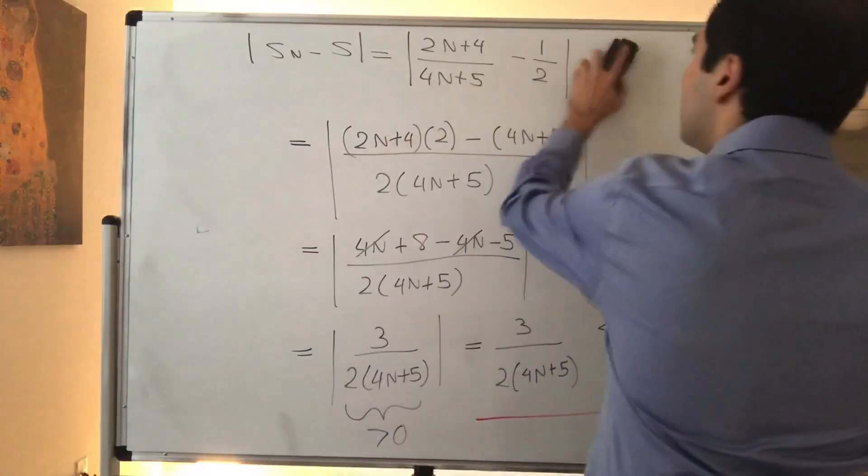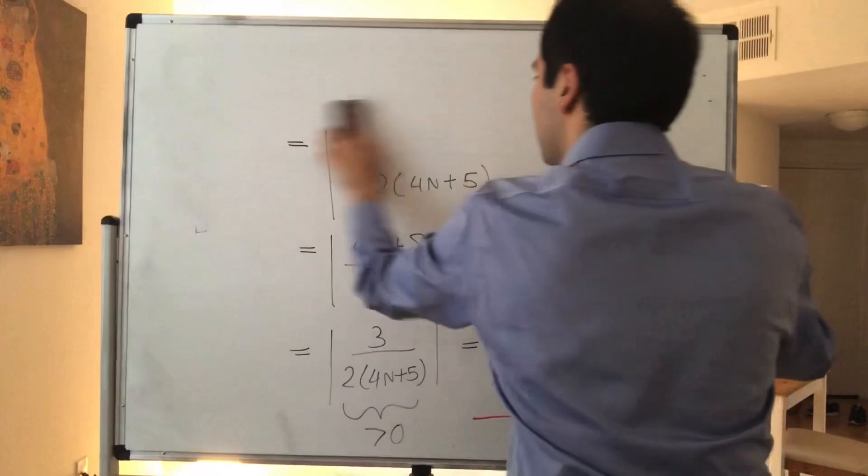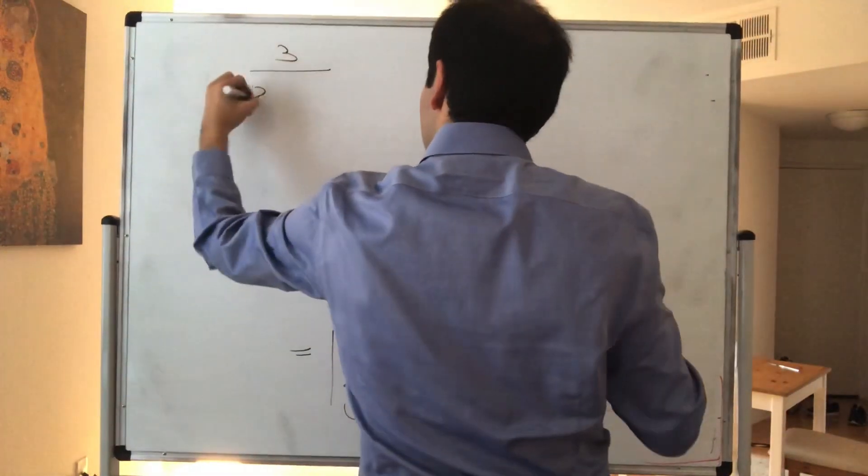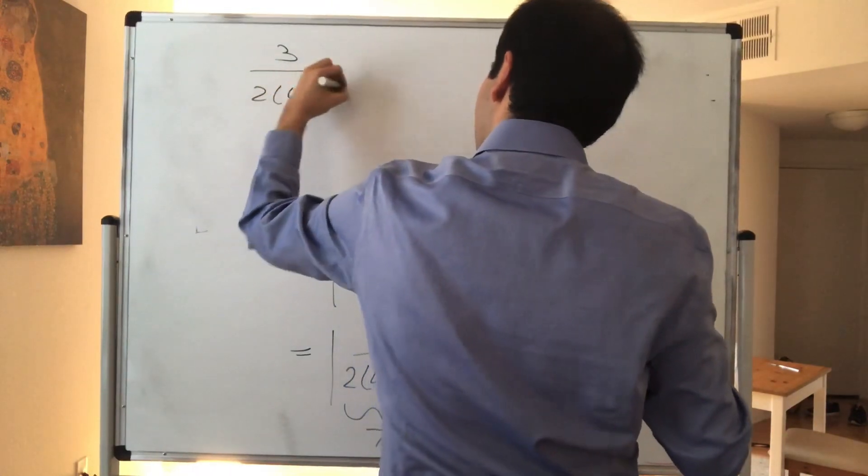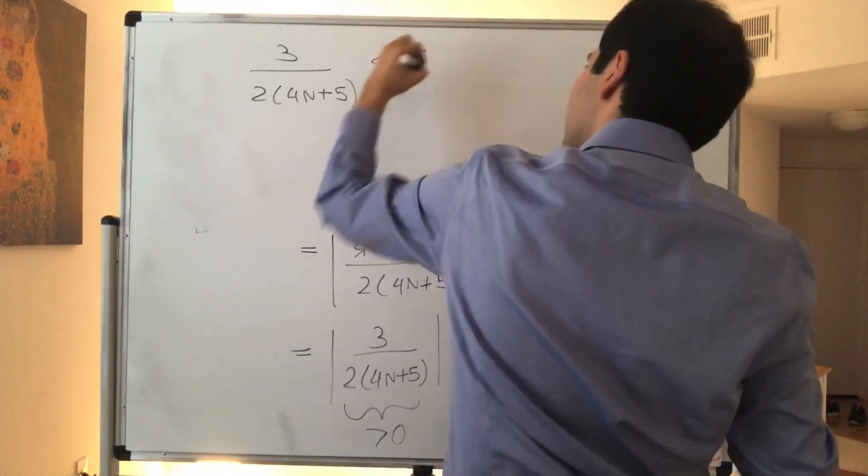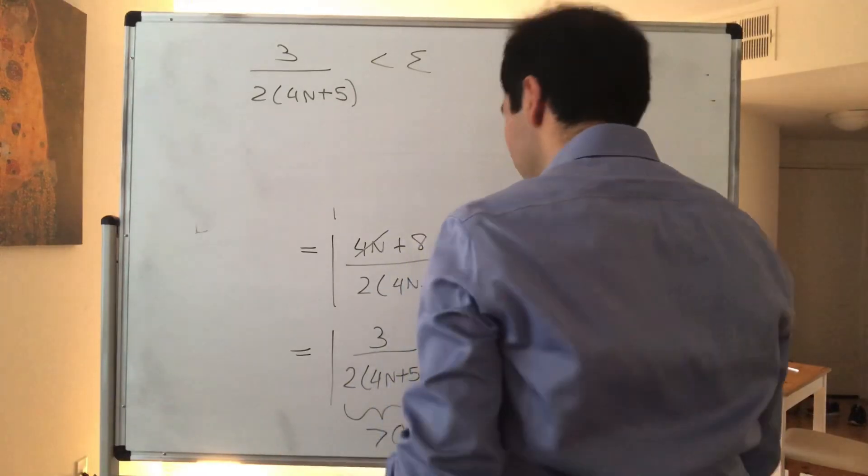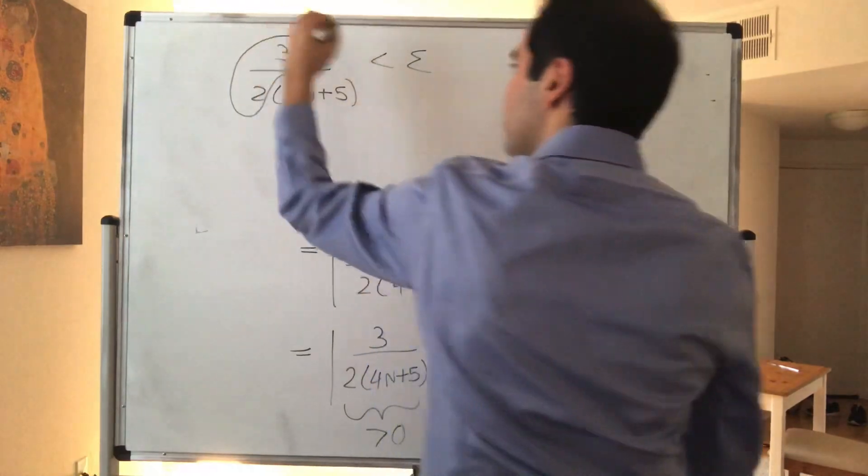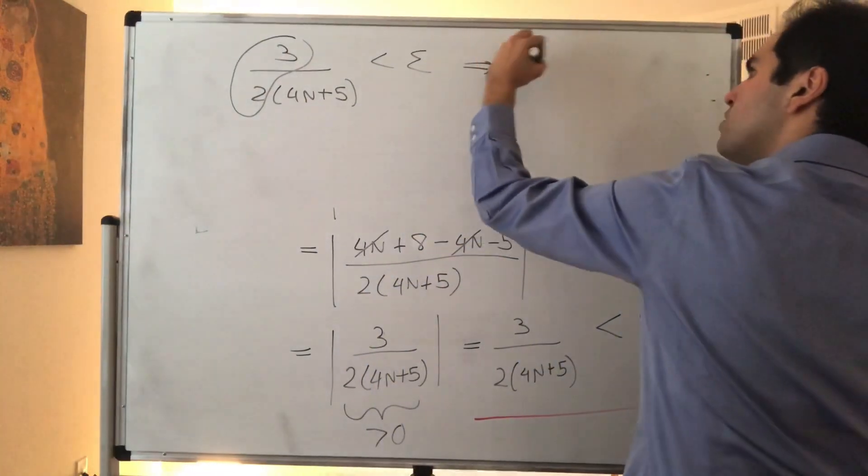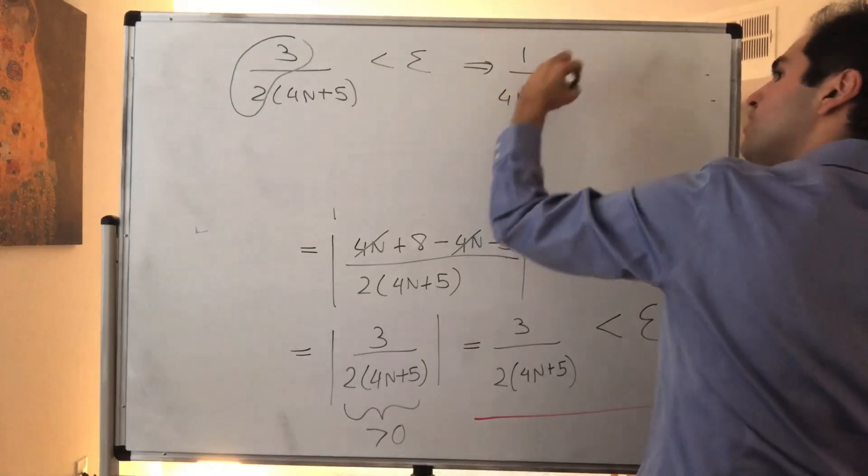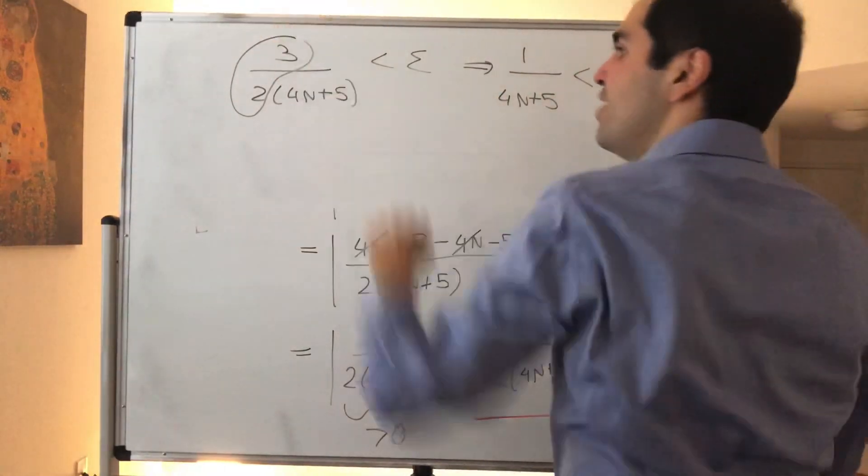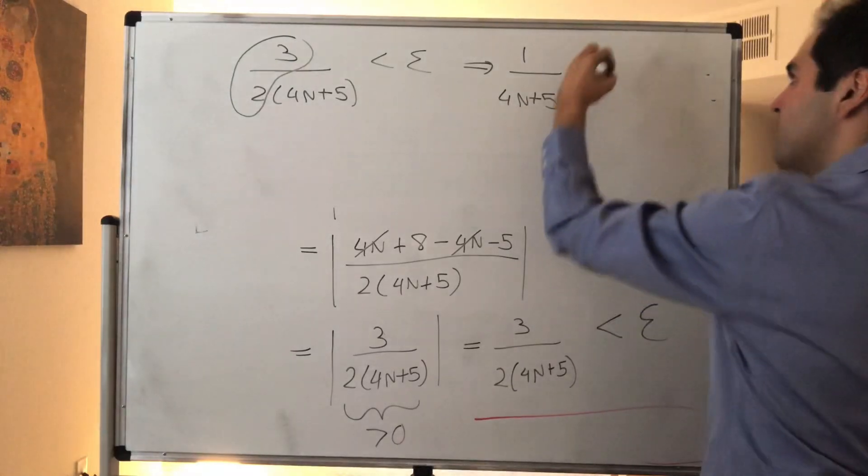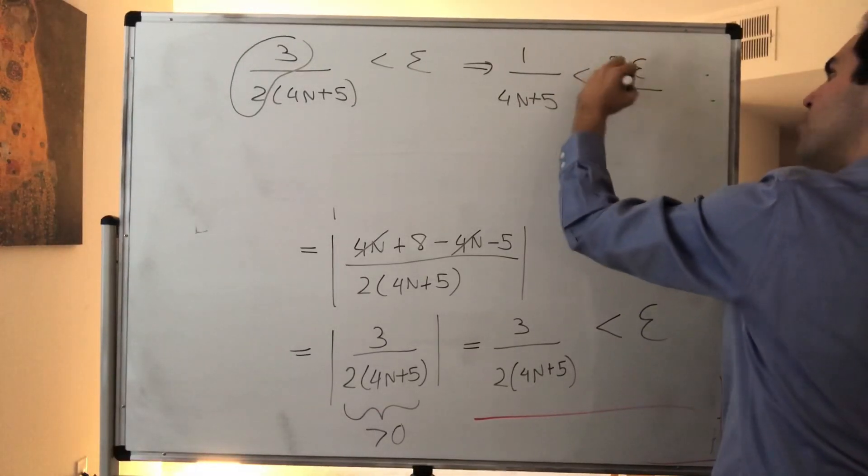So what does that imply? Now, what does that imply? First of all, so 3 over 2 times 4N plus 5 is less than epsilon. Well, one thing you can do is divide by 3 halves. So this becomes 1 over 4N plus 5. It's less than, then, if you divide by 3 halves, it's like multiplying by 2 thirds, so it's 2 epsilon over 3.